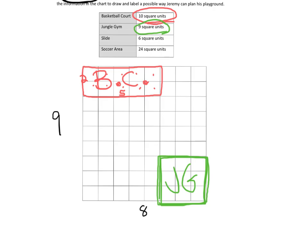And the slide is 6 square units. Let's make that a 2 by 3. So let's do this right there. There's my 2 by 3. And I'll label that with an S for slide.